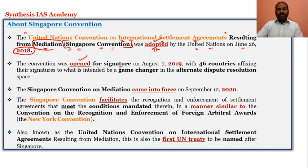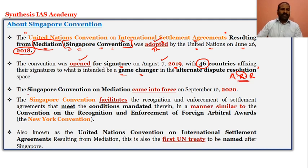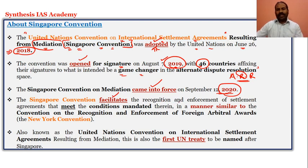The Singapore Convention was opened for signature and signed by 46 countries on August 7, 2019. It is intended to be a game changer as it acts as an alternative dispute resolution mechanism. The Singapore Convention on Mediation came into force on September 12, 2020. Key years to remember: adopted 2018, signed 2019, in force 2020.